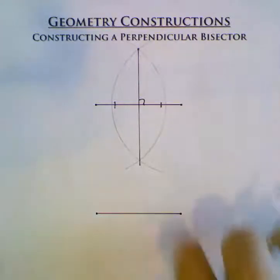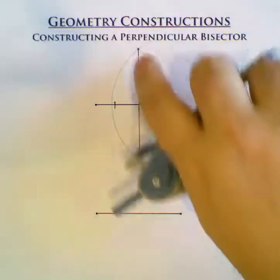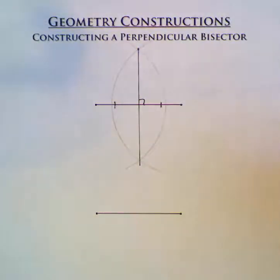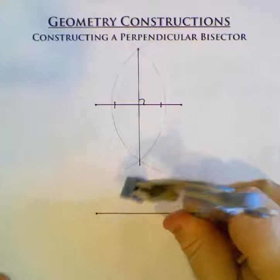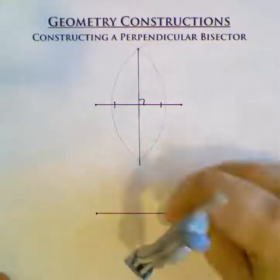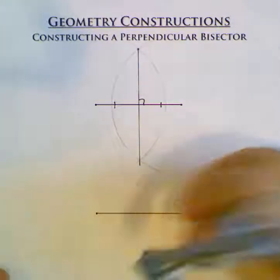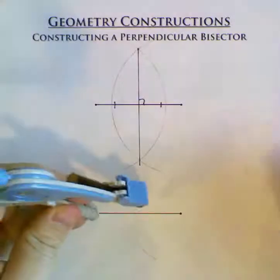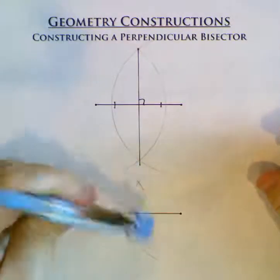So instead, they notice that the only part we really care about are the intersection points. So instead of making two really large arcs, how about if I just make one arc this way and a little one here, and come over to this side and make a little one here and a little one here.